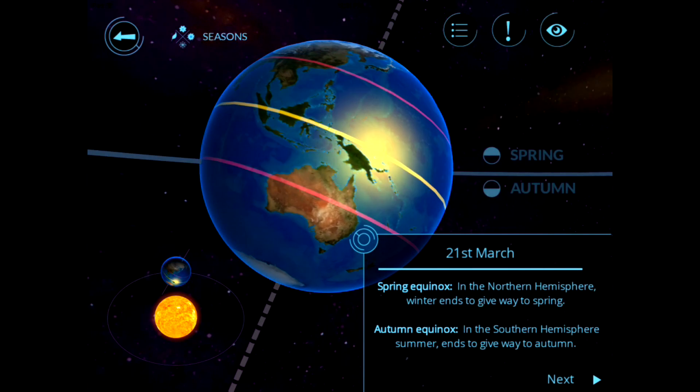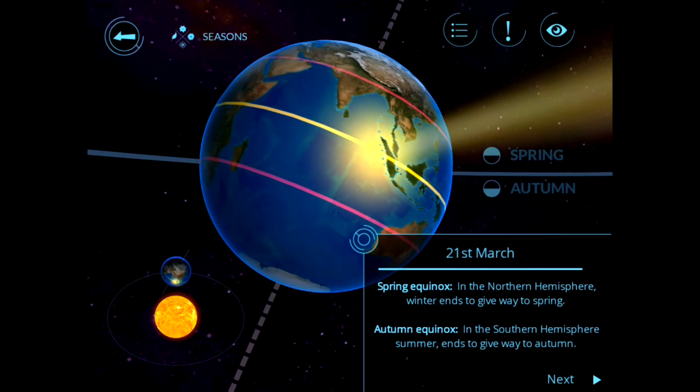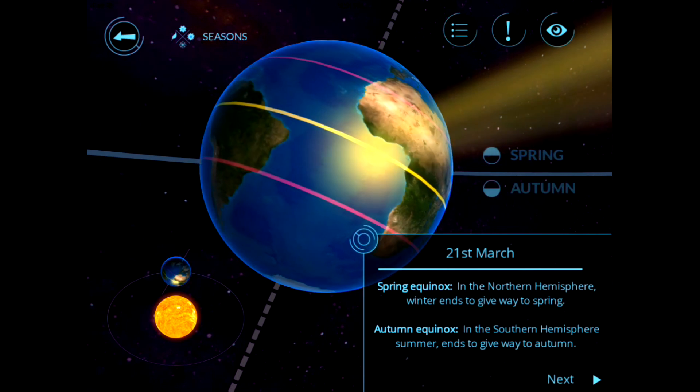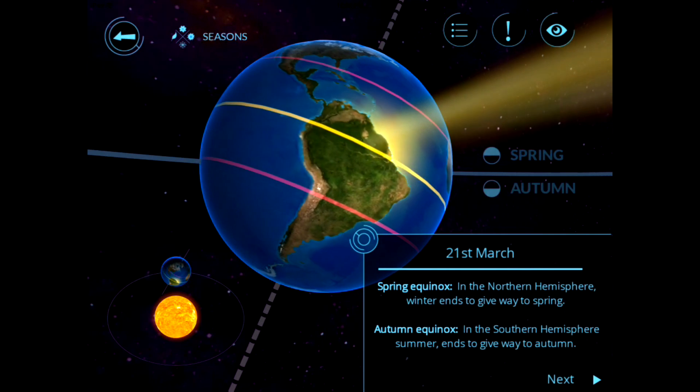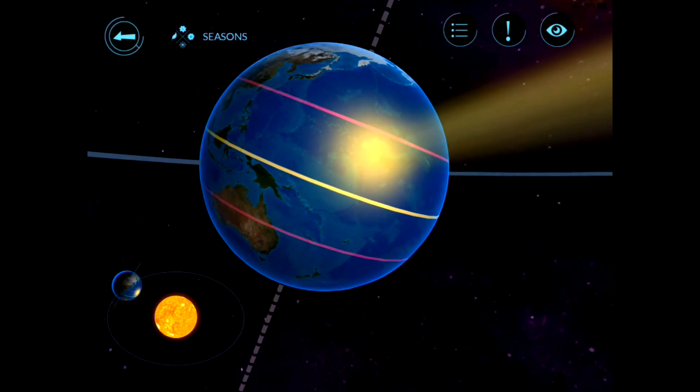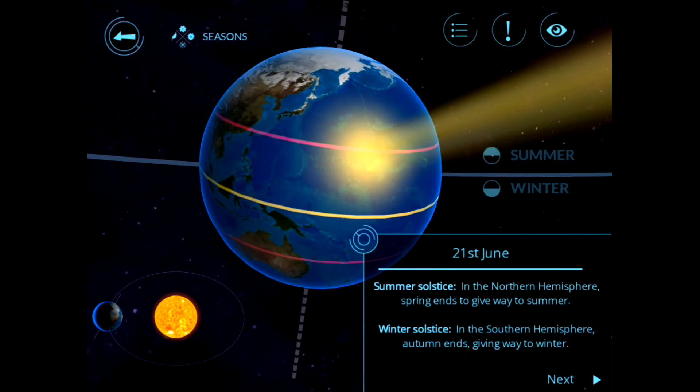The seasons topic for Earth really illustrates how well the app visually demonstrates different concepts about bodies in our solar system. As you know, the Earth rotates on its axis, what creates the seasons, and instead of reading about this, Arloon Solar System demonstrates it.